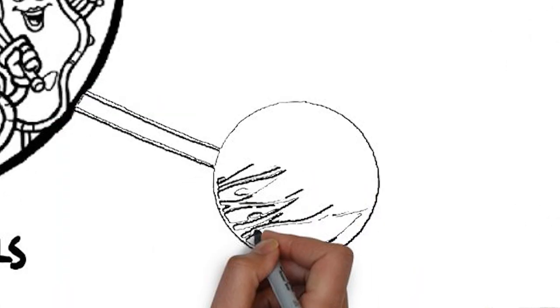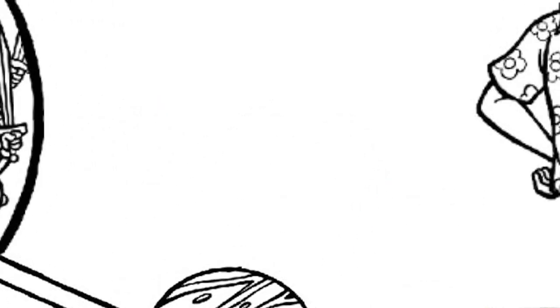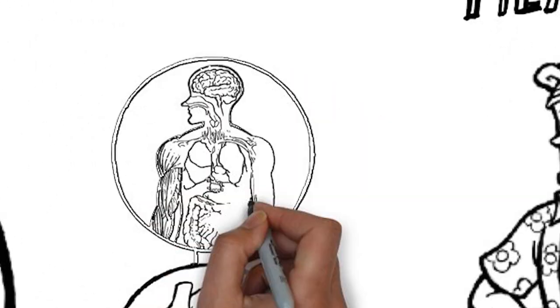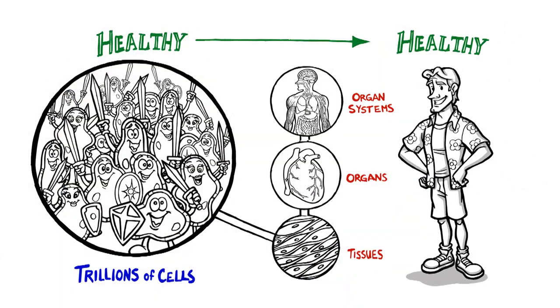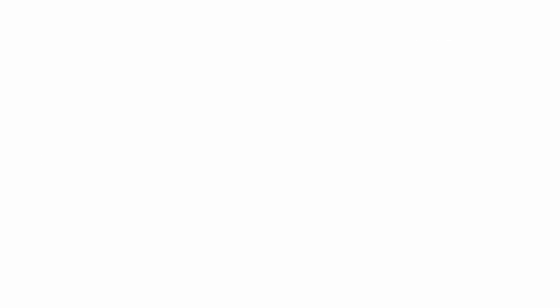Because Tony has healthy cells, he also has healthy tissues, organs, and organ systems that thrive. The state of his cells determine the state of his body. There are several factors that will influence the health of Tony's cells.